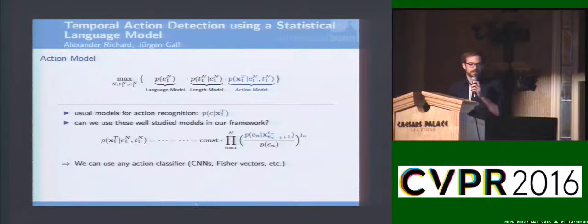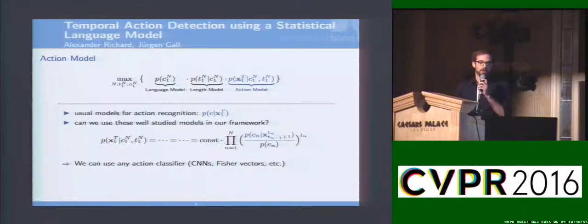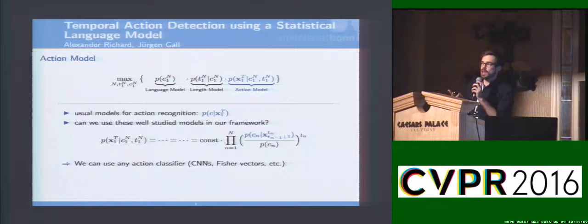Finally there is the main part, the action model. From classical action recognition we have some well-studied models that usually have a posterior form like P of C given the video. In our framework the action model looks slightly different, but luckily we can transform it so we get this posterior form into our equation. The nice thing is we can plug in any existing well-studied model from action recognition like CNNs or Fisher vectors with support vector machines and just use it there.